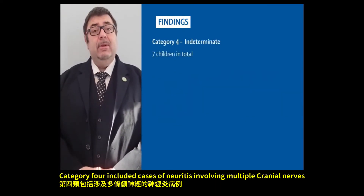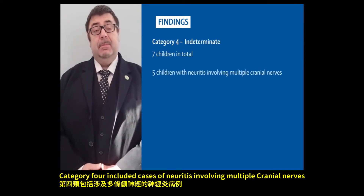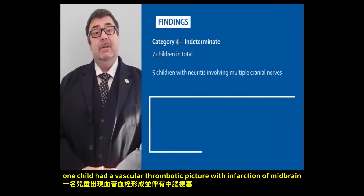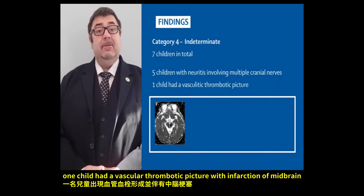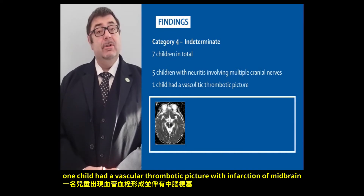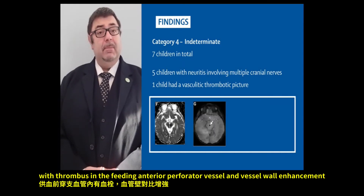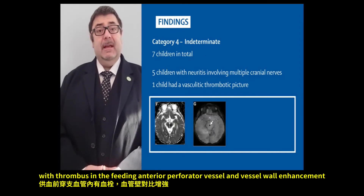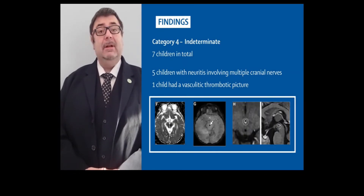Category four included cases of neuritis involving multiple cranial nerves. One child had a vasculitic thrombotic picture with acute infarction of their left midbrain, with thrombus in a feeding anterior perforator artery and vessel wall enhancement.